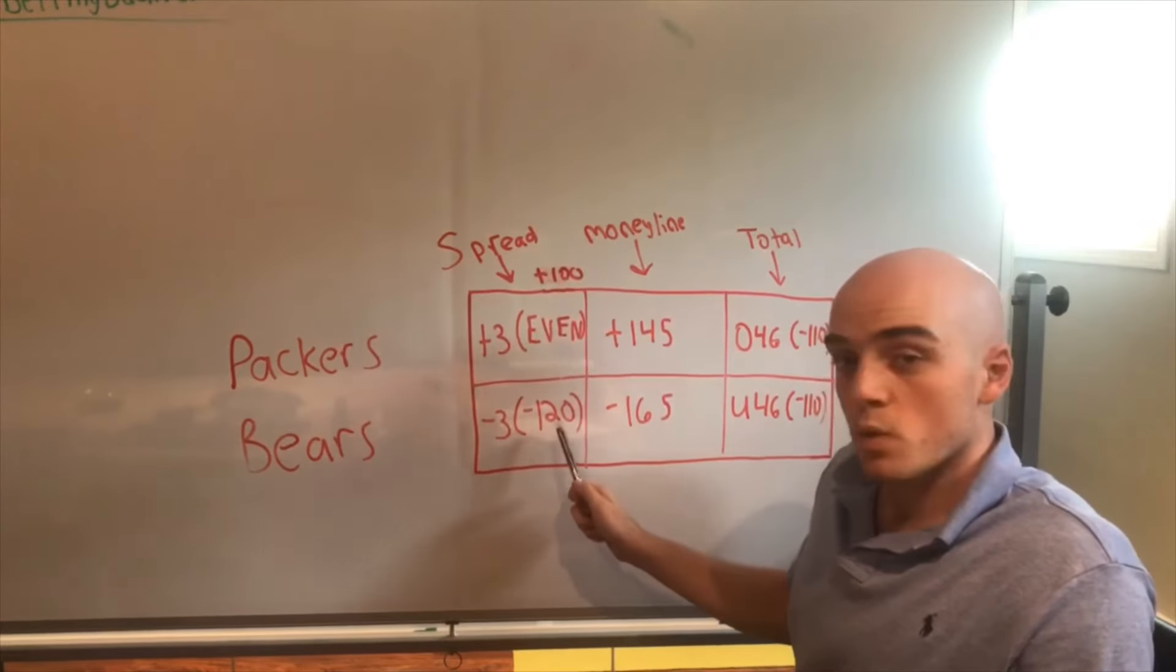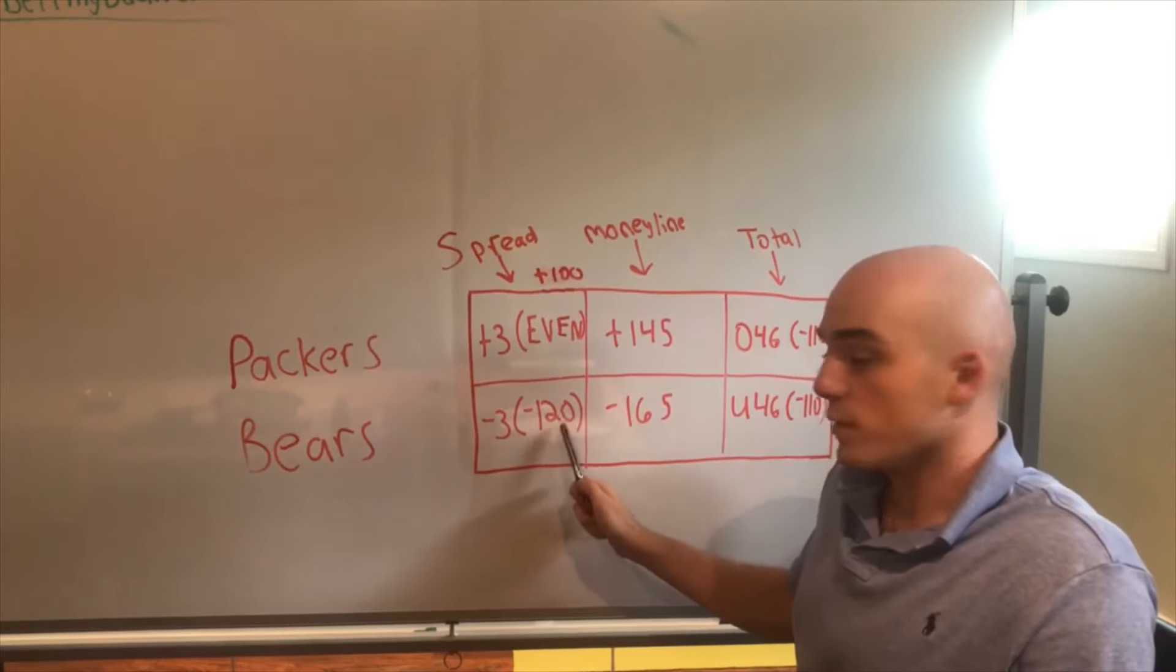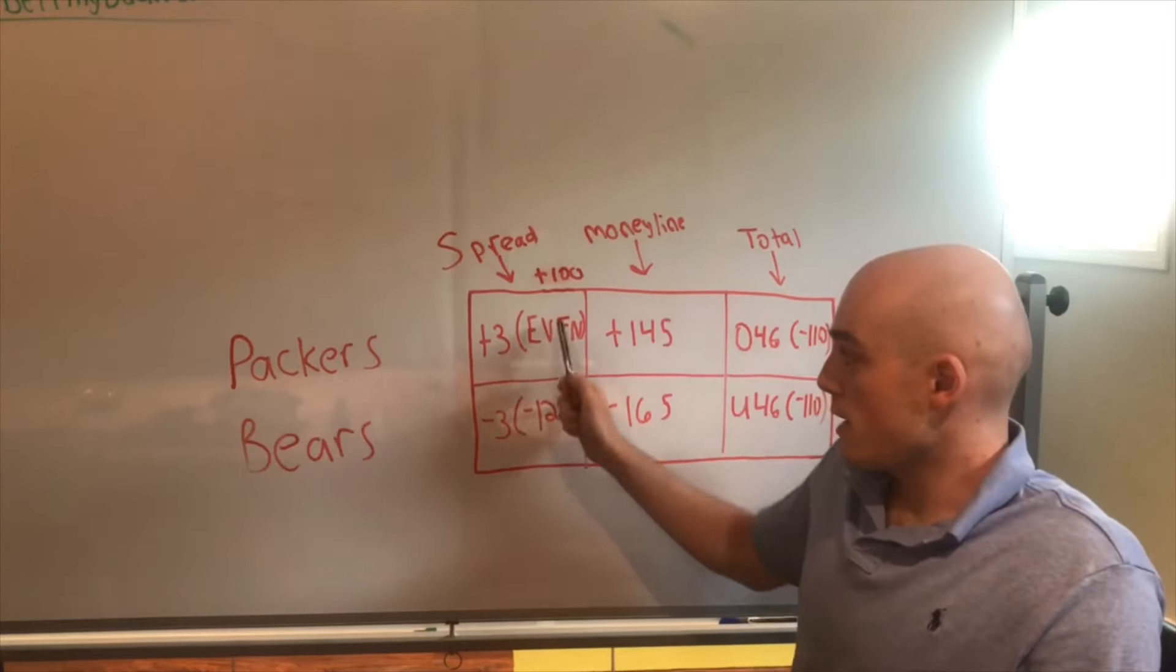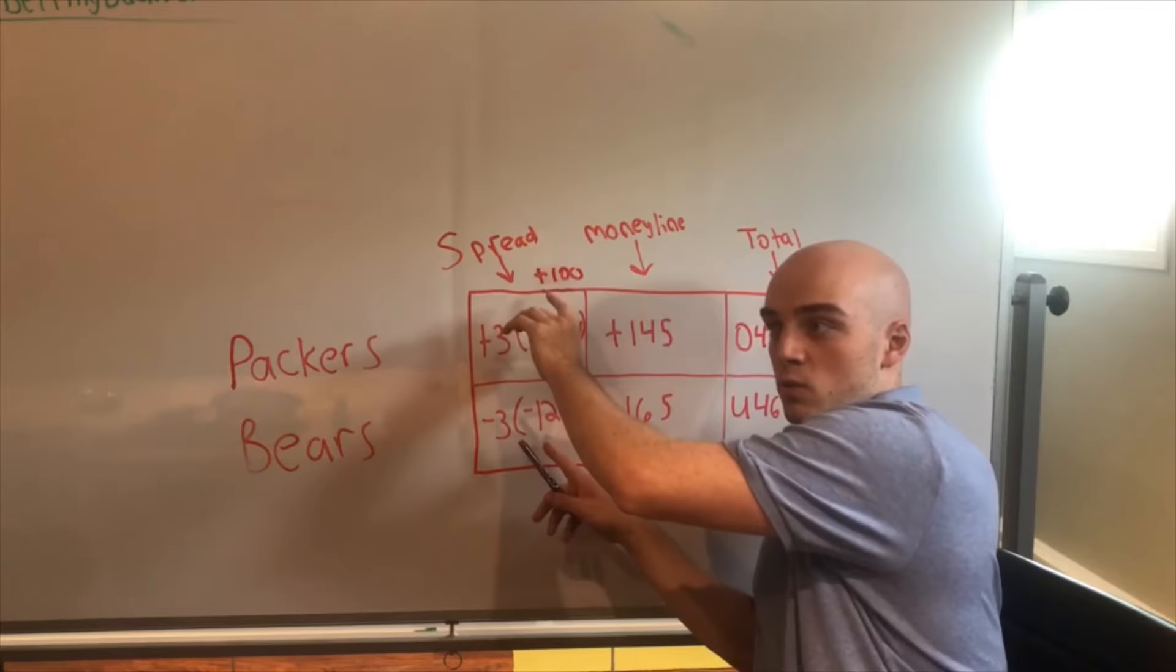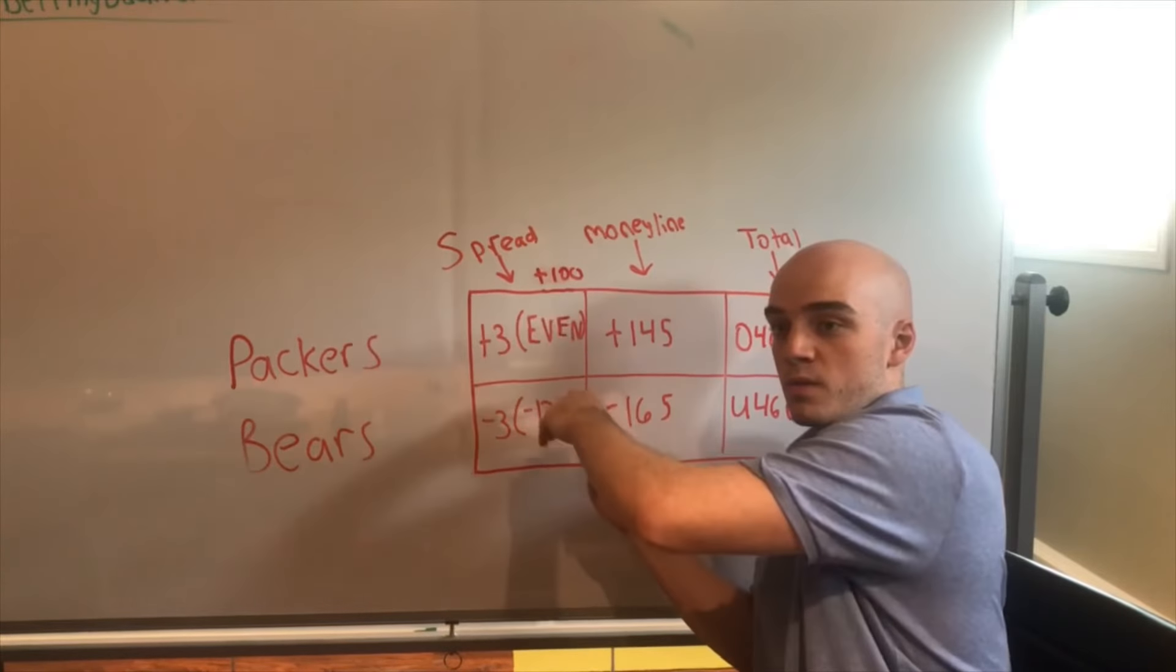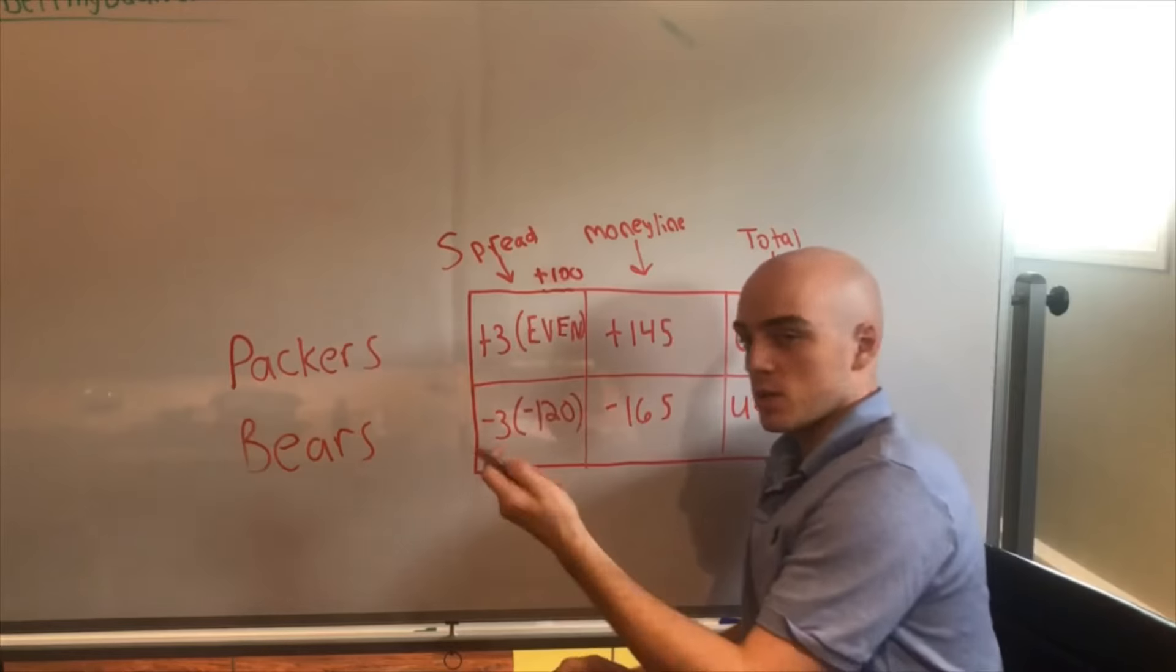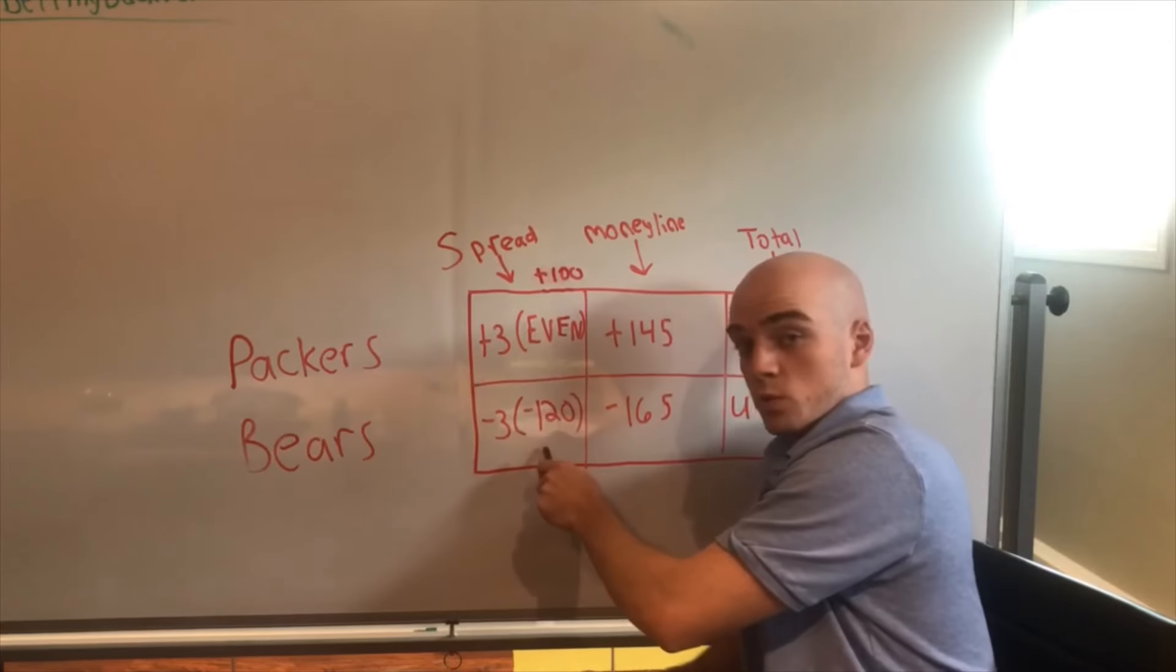And then likewise on this side, the total of these two odds is usually gonna equal minus 20. So in this case we have plus 100 and minus 120 for a minus 20.